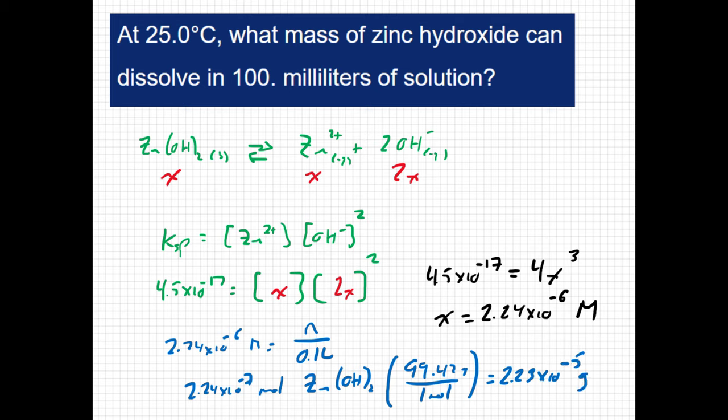Now this is a really small mass, but zinc hydroxide isn't particularly soluble. The Ksp value is 10 to the negative 17, so it takes very little zinc hydroxide to saturate 100 milliliters of solution.